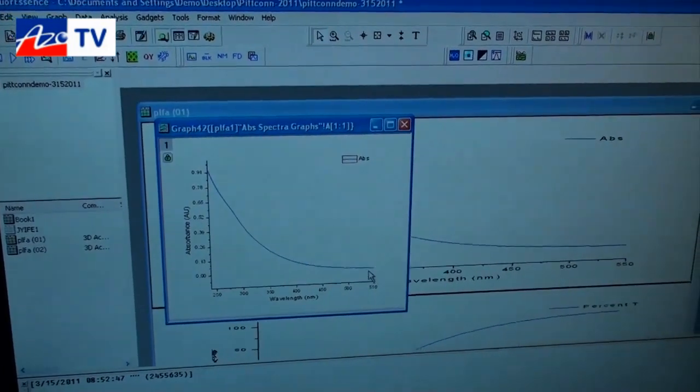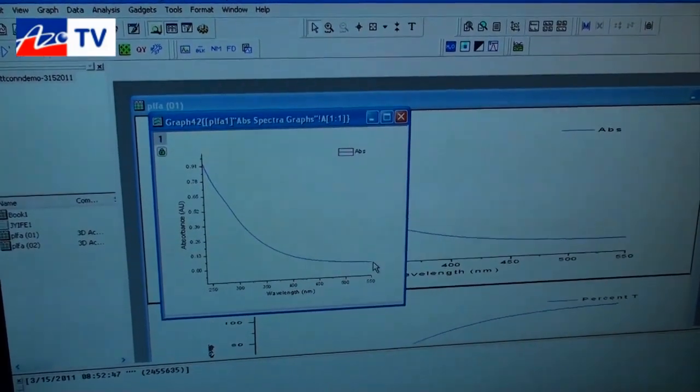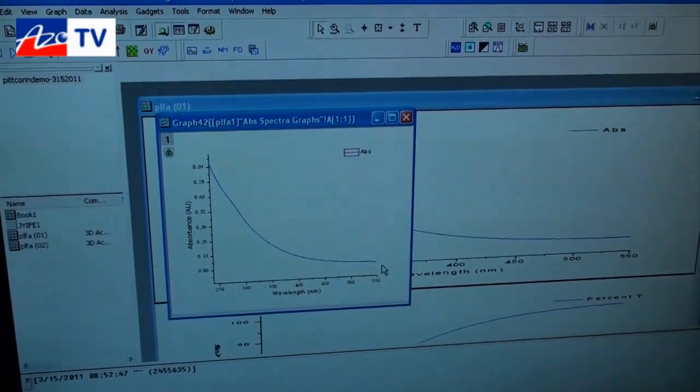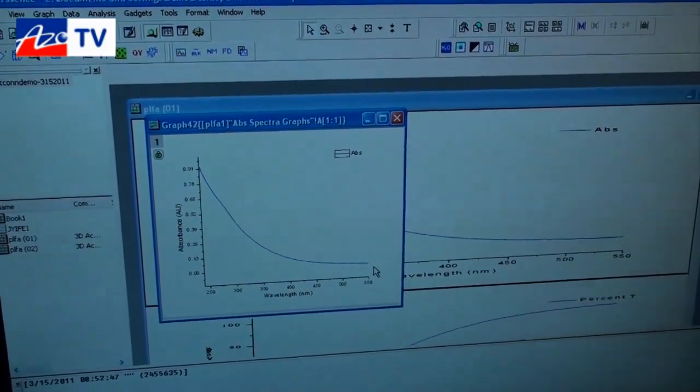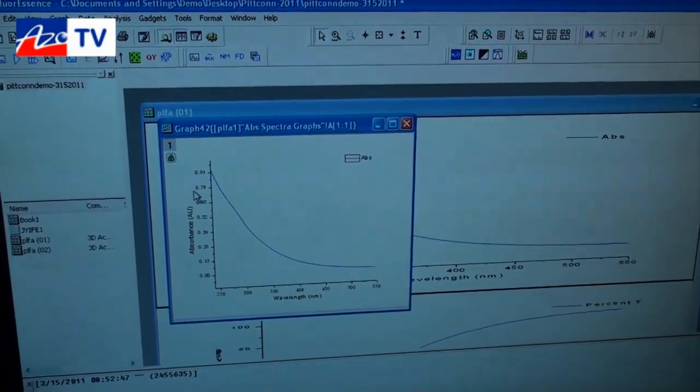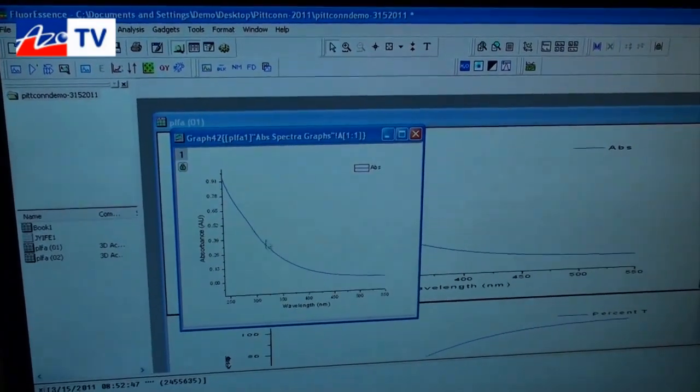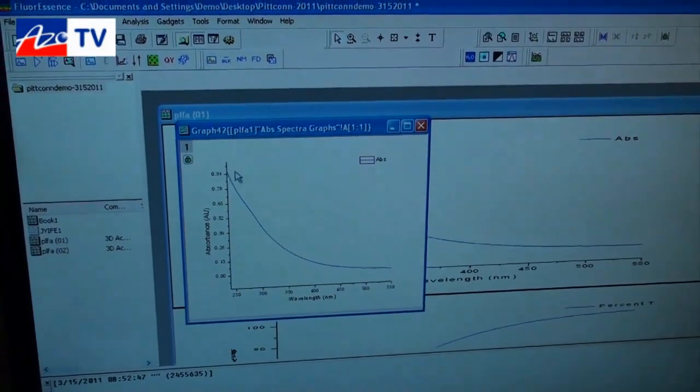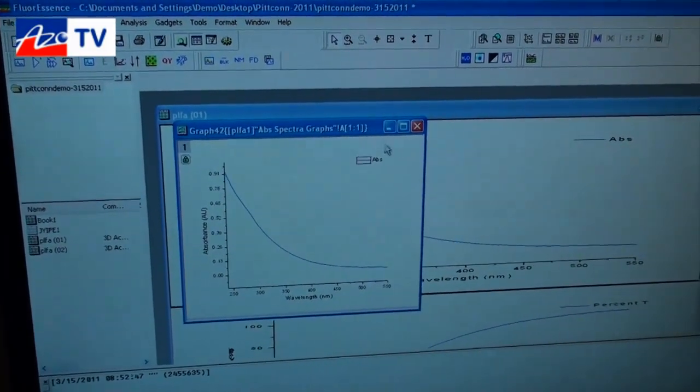One key thing about the instrument design is that it actually scans the excitation and absorption wavelength in reverse and this minimizes the exposure of the sample to the ultraviolet end of the spectrum. So as you scan in reverse you actually end up avoiding exposure to the UV light which can photo bleach the sample.